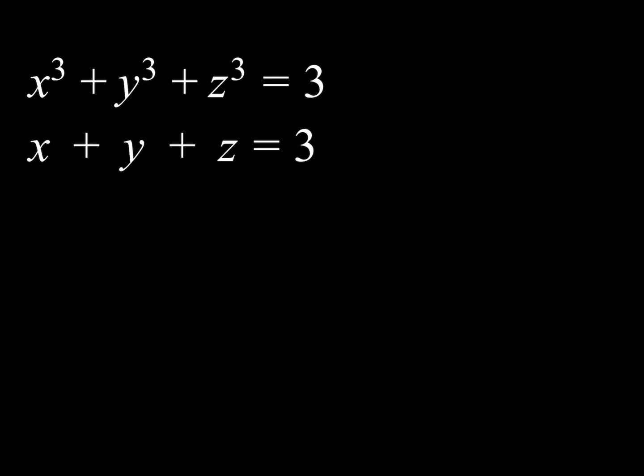Why is this called a Diophantine system? Because first of all, we're looking for integer solutions, and second, we only have two equations with three unknowns. With real numbers, there are obviously going to be infinitely many solutions. So how do we go about solving this system?